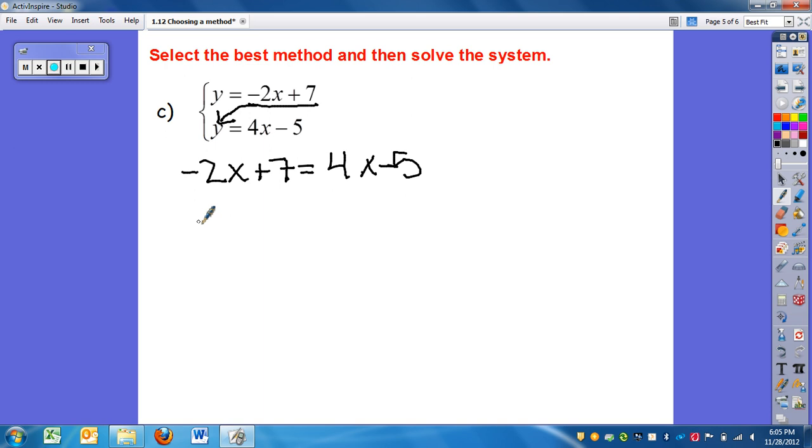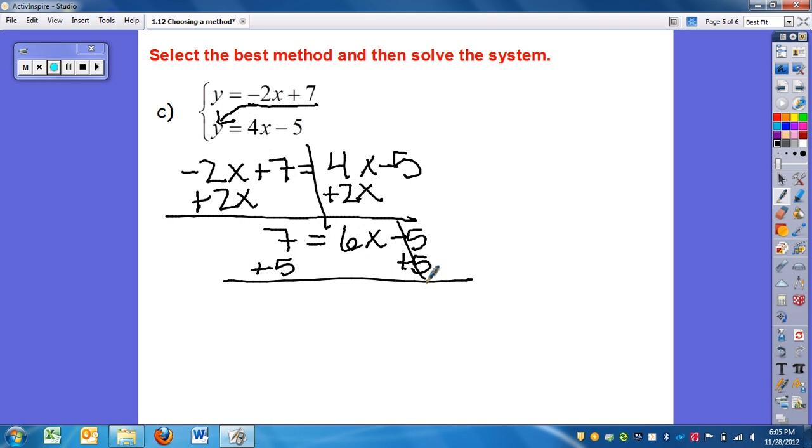So I get negative 2x plus 7 equals 4x minus 5. Again, you could use elimination, which you can. And go ahead and pause the video right now and use elimination. And then see if you got the same answer. Which you should if you did it correctly. I'm just going to move my term over. So I have 7 equals 6x minus 5. And I'm going to move my 5 by using inverse operations. So I have 12 equals 6x. Divide by 6. X equals 2.